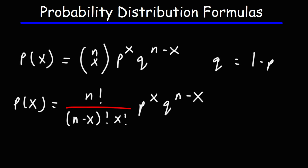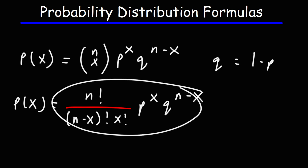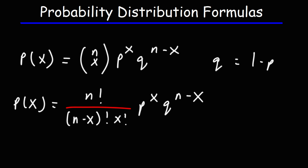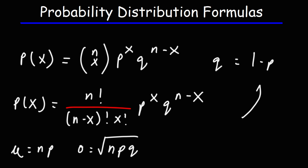So this is the formula for the probability of a binomial distribution. The mean is equal to n times P. The standard deviation is equal to the square root of n times P times Q, and keep in mind Q is 1 minus P. So those are the formulas you need to know when finding probability using the binomial distribution.